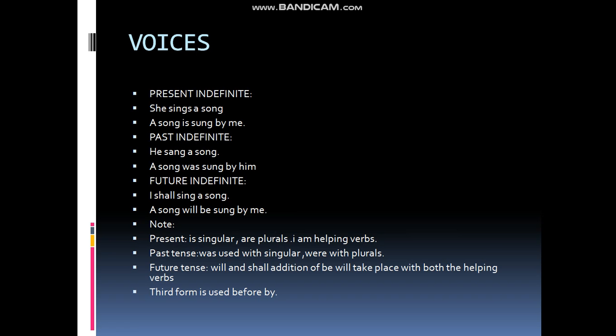Next, past indefinite tense: 'He sang a song.' 'Sang' is the second form of the verb, showing past tense. To transform: 'a song' comes first, then 'was' — the helping verb for past tense used with singular subjects. The third form of the verb 'sung' follows, then 'by him.' He changes to him: 'A song was sung by him.'